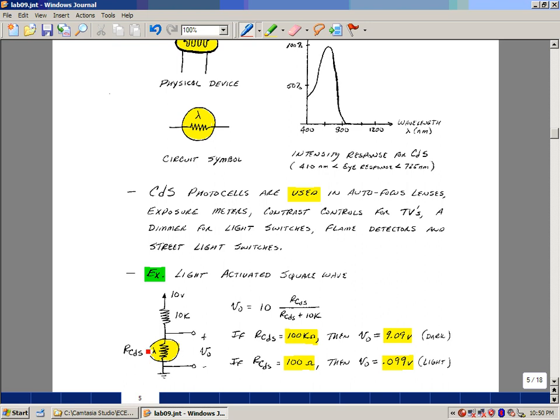When light's exposed on this, the resistance goes way down. Suppose it's as low as 100 ohms. Then you have 100 ohms over 100 ohms plus 10k, which is roughly 100 divided by 10k times 10. That'd be about a tenth. The actual value is 0.099. So we're going to use this as our sensor of being light and dark, so I could sense some change in light level.